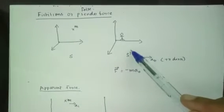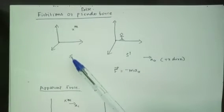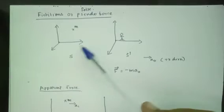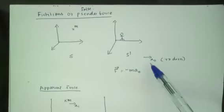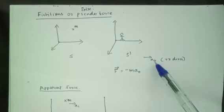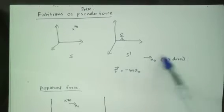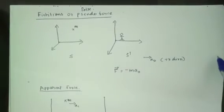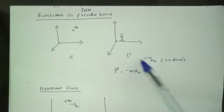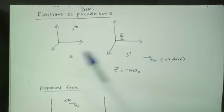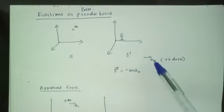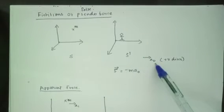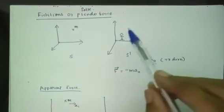We have two frames of reference. Here we have a rest frame, which is the S frame. And there is another frame, S', which is moving with an acceleration A0 in the x direction — moving with acceleration A0 with respect to the S frame. This S frame is at rest, and this S' frame is moving with acceleration A0.